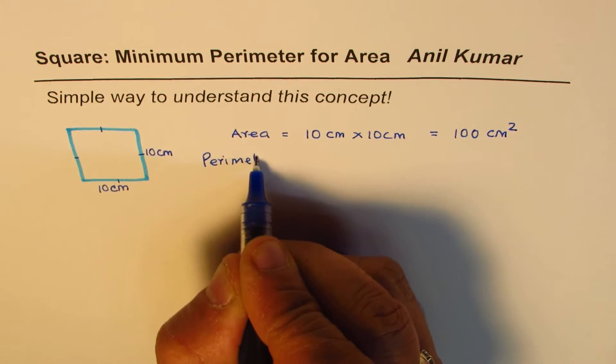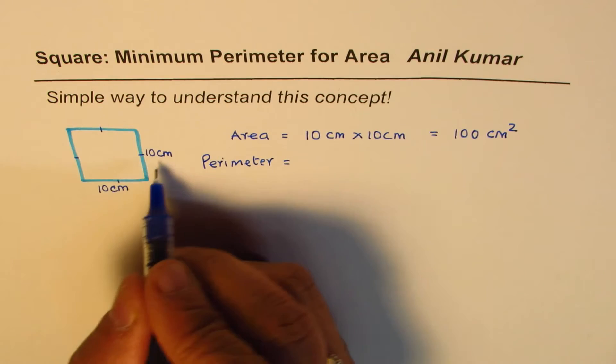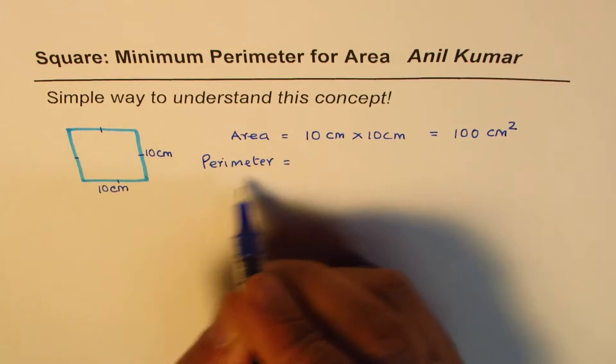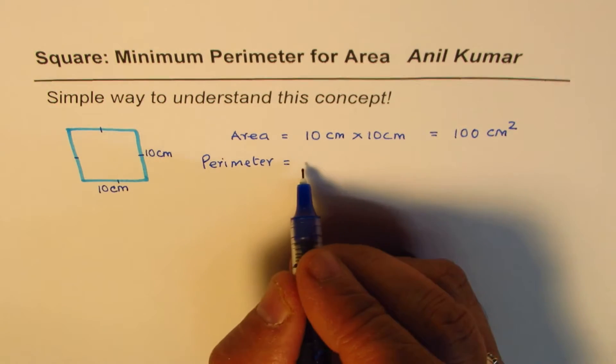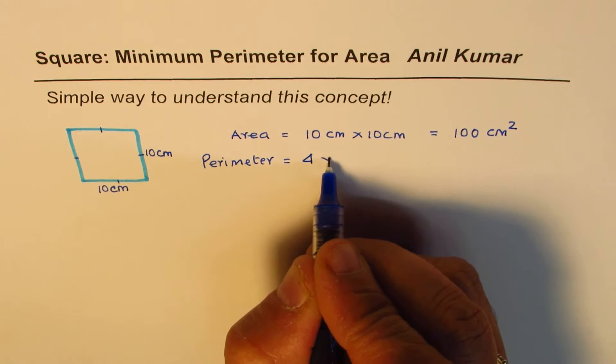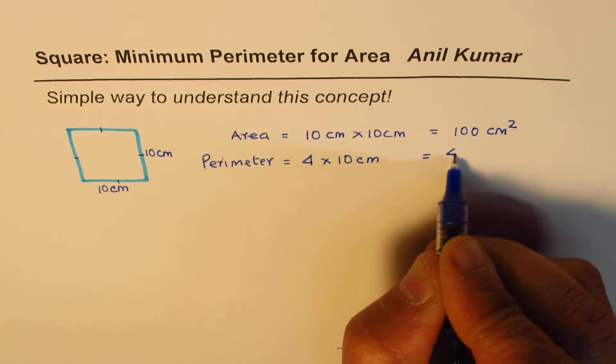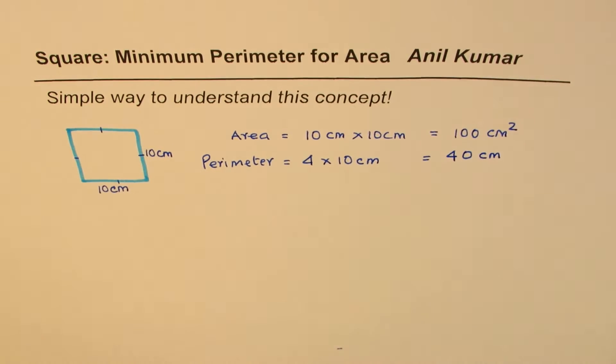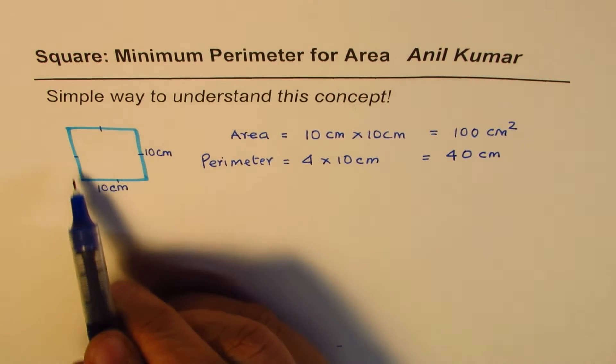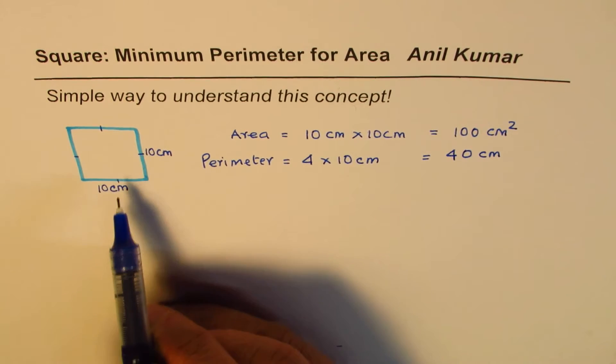Perimeter of the square is 4 times 10 because all sides are equal, so it is 4 times 10 centimeters and that equals 40 centimeters, right? Now we want to show that this square will have the minimum perimeter for the given area.